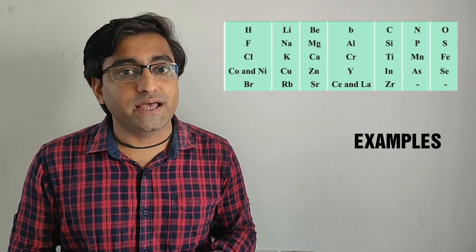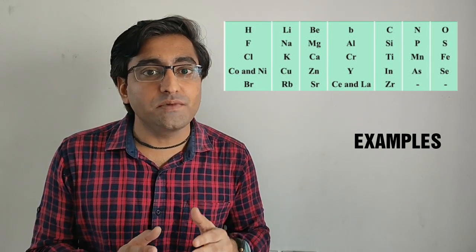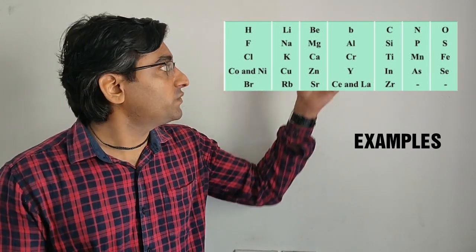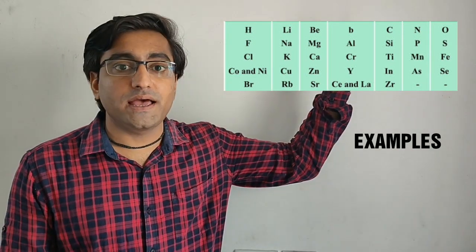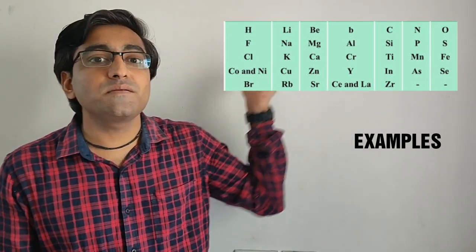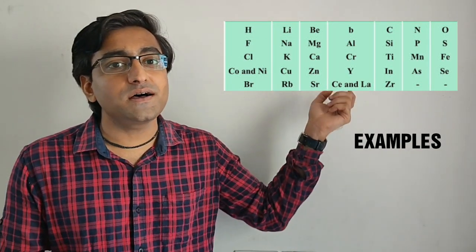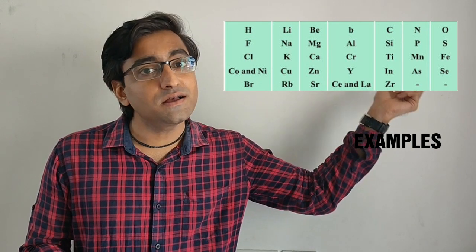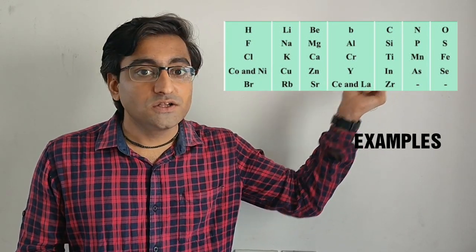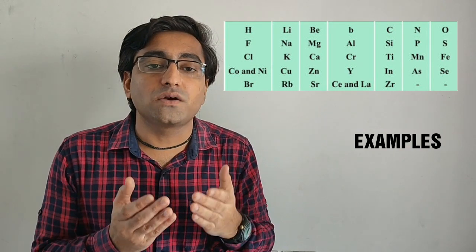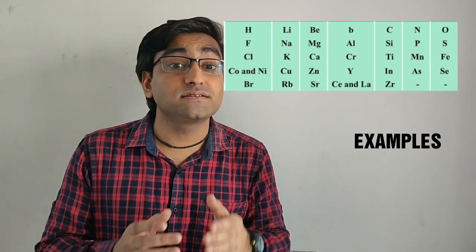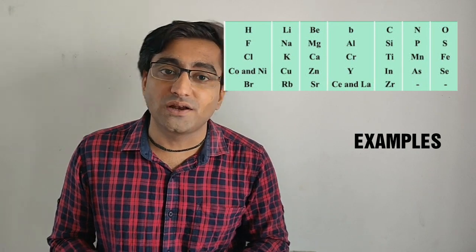Let us take one more example, but this time, in order to make it fun, we will use musical notes. We will start with Carbon as Sa. Again, the Sa repeated at Silicon. As we all know, Carbon and Silicon both have similar properties, and hence this example is also obeying the law.